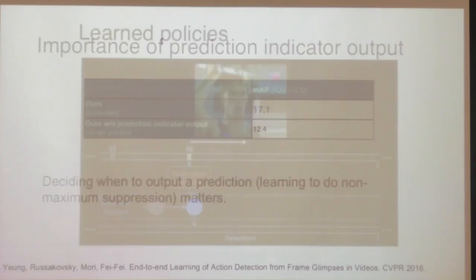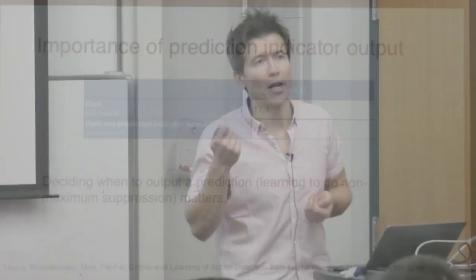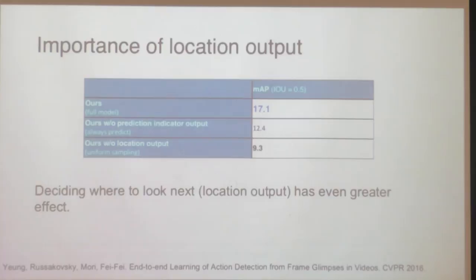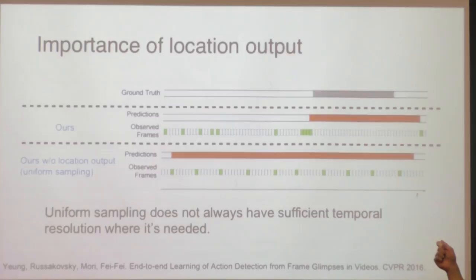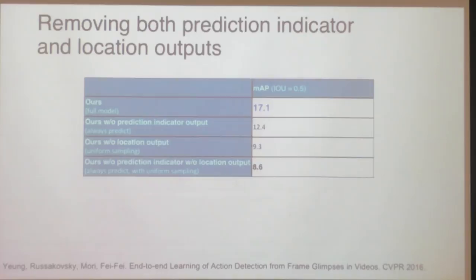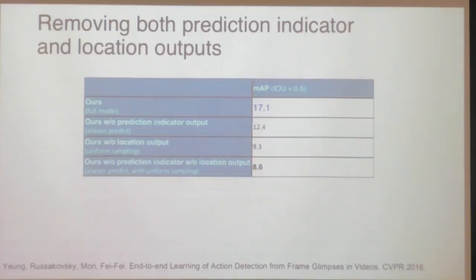Ablation studies check the benefits of these different components. Turning off the indicator variable that lets me say 'don't trust this particular detection' causes performance to drop a lot — you don't want to force the model to always make a prediction. It also matters that you don't do uniform sampling over frames; if I just sampled 2% of frames uniformly, that would not perform as well. This method can devote resources to where it matters, sampling frames near the boundaries of actions rather than uniformly. And adding location regression — deciding how long an output should be and what offset to use — also helps. That's the middle part of the talk: temporal structure and reinforcement learning methods to learn how to watch videos to find actions.